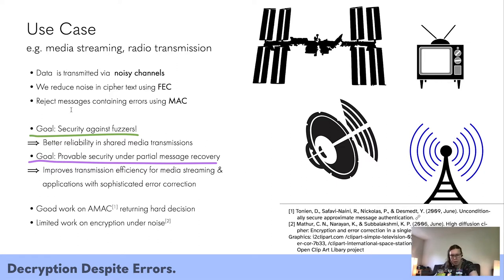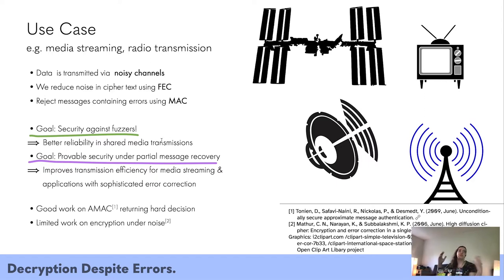The question is: can we do any better than that? I think the answer is yes. The first goal is security against fuzzing, which is just better reliability in shared media transmissions — I'll formalize that later. The second goal is providing security under partial message recovery, which basically means that even if there are many bitflips in the ciphertext and the original ciphertext cannot be recovered, the scheme still decrypts to some related plaintext, and the assumption is that this can be done securely.